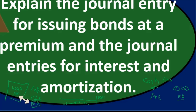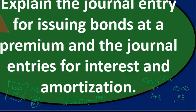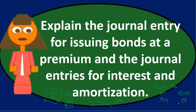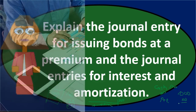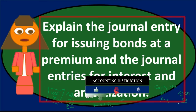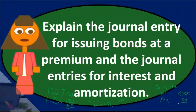The effective interest method is the preferred method. It's more precise because it better aligns with the matching principle — similar to using an amortization table to allocate loan payments between interest and principal. If the difference between the effective method and straight-line is not material, you can choose either, but the effective method is preferred.